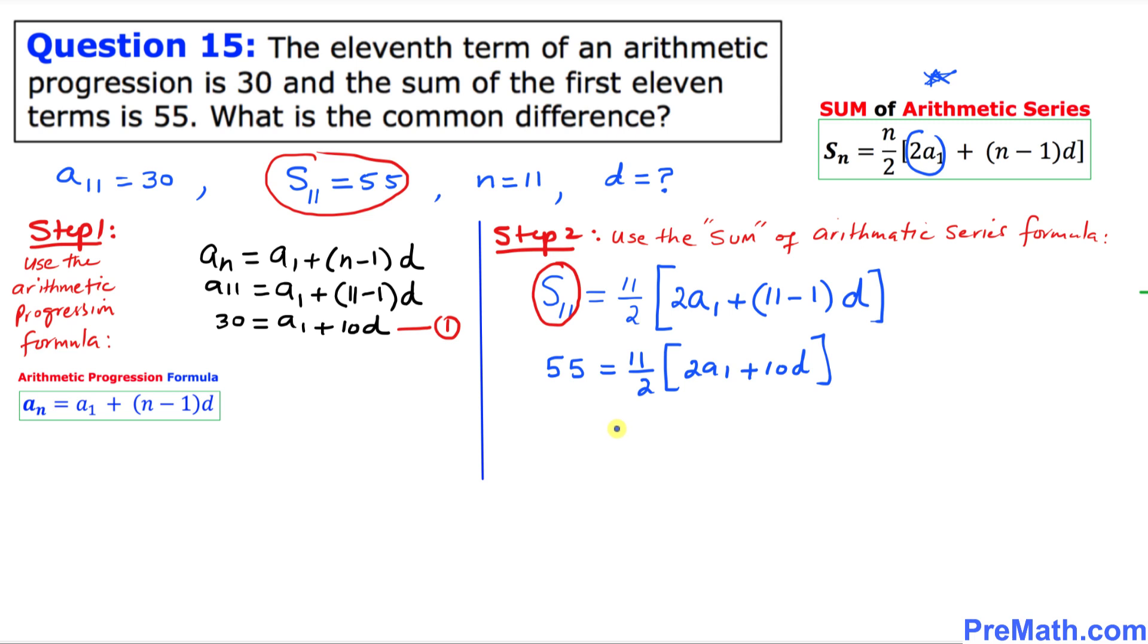So I can see this is 11 over 2. And here you can see this 2 is in common, I can just move it outside. So that's going to be A1 plus 5D. And this 2 and this 2 cancels out.